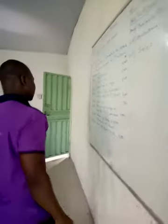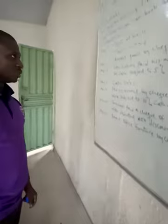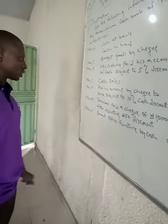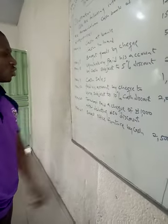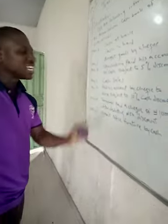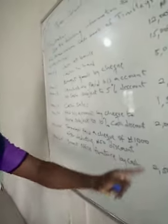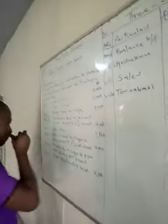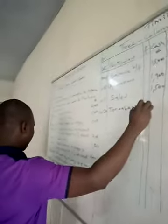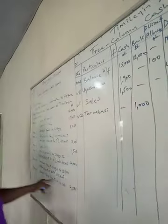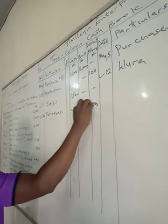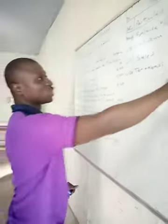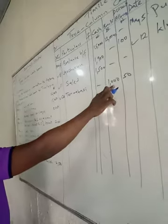Next we have Toro Abasi. May 20th: Toro Abasi paid a check of 1,000 naira after deducting 15 naira. So Toro Abasi is paying. How much did he pay? He paid 1,000 by check after deducting 15 naira discount. The total amount he was supposed to pay normally is 1,015 naira, but because of the discount he was given, he paid 1,000 naira.